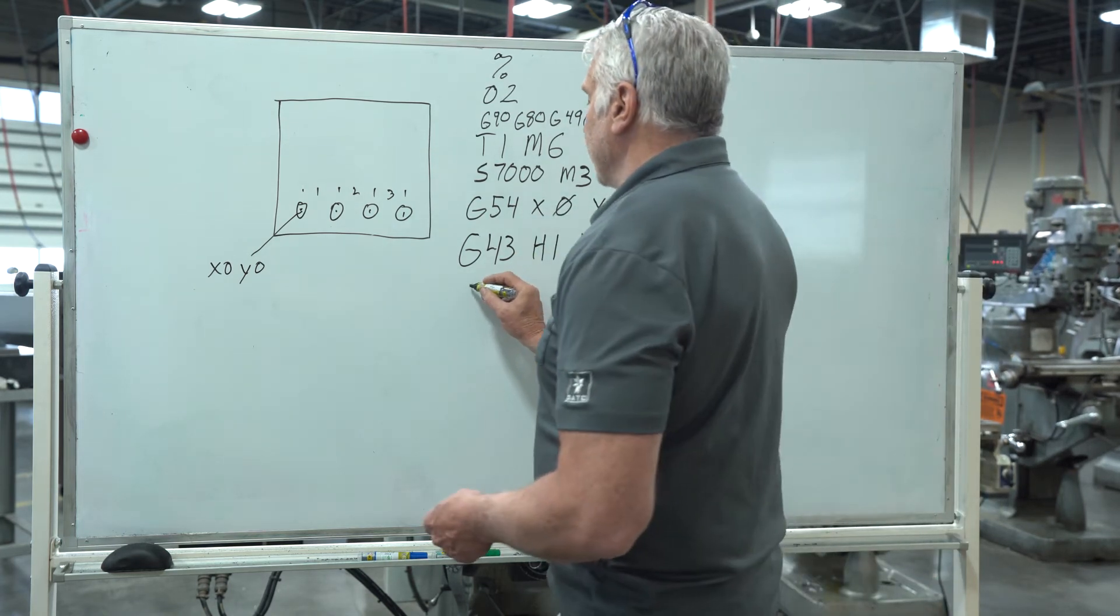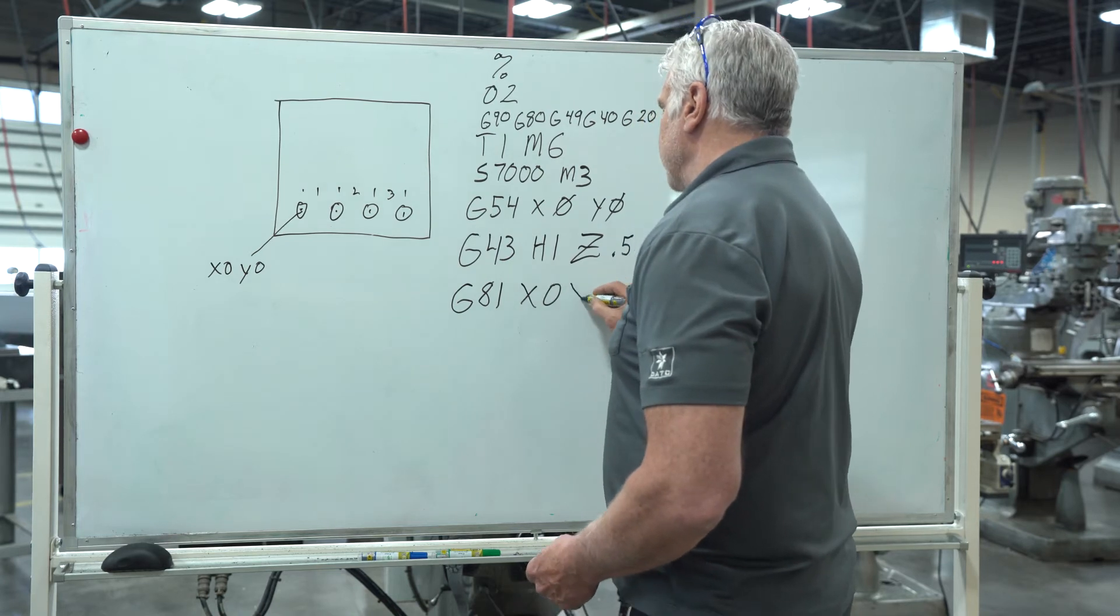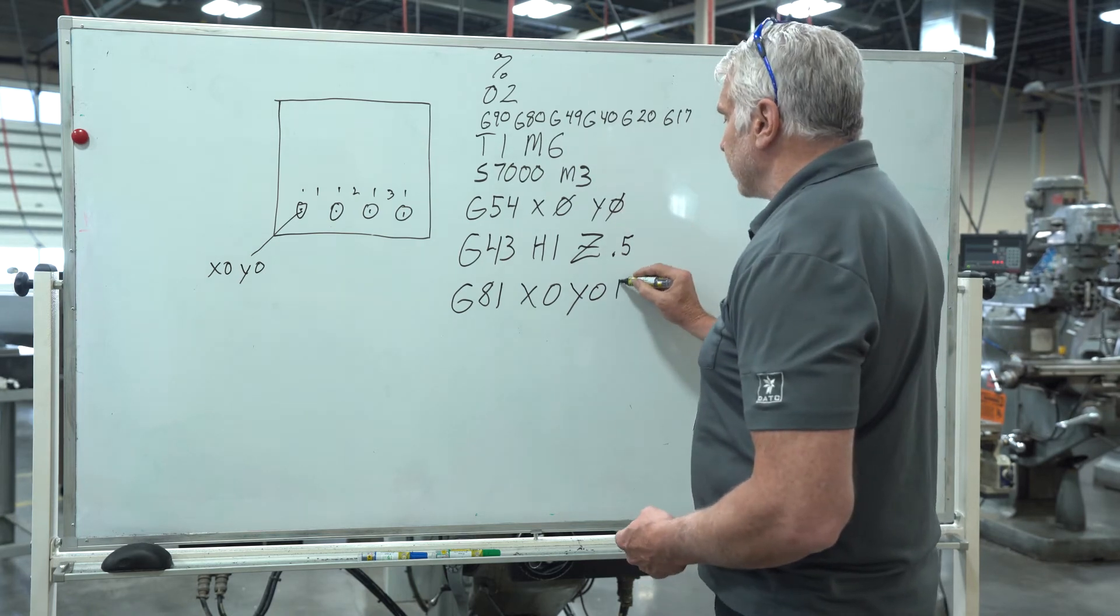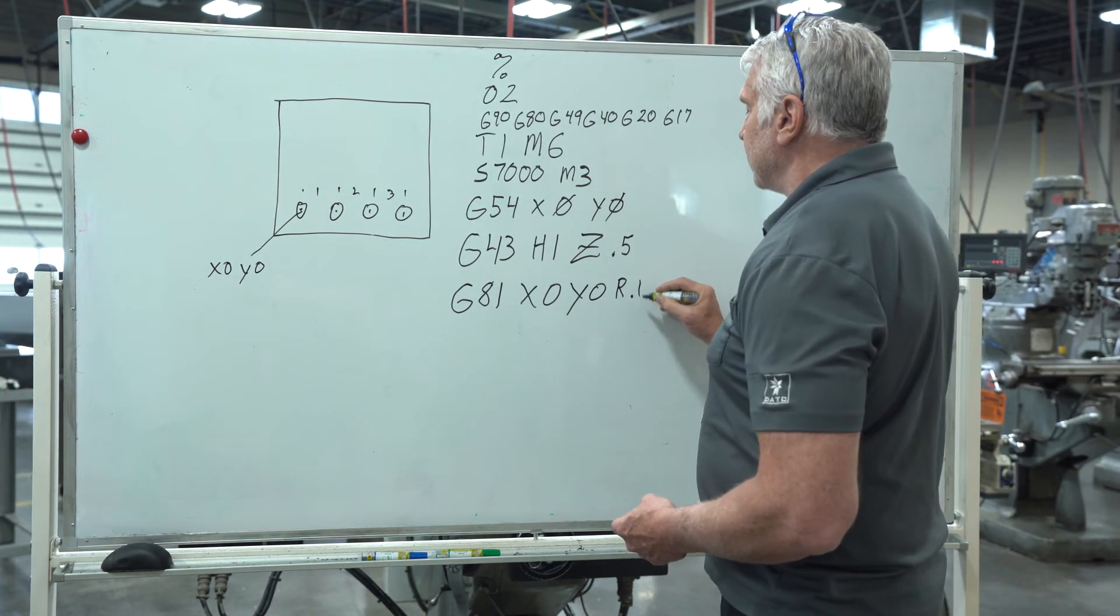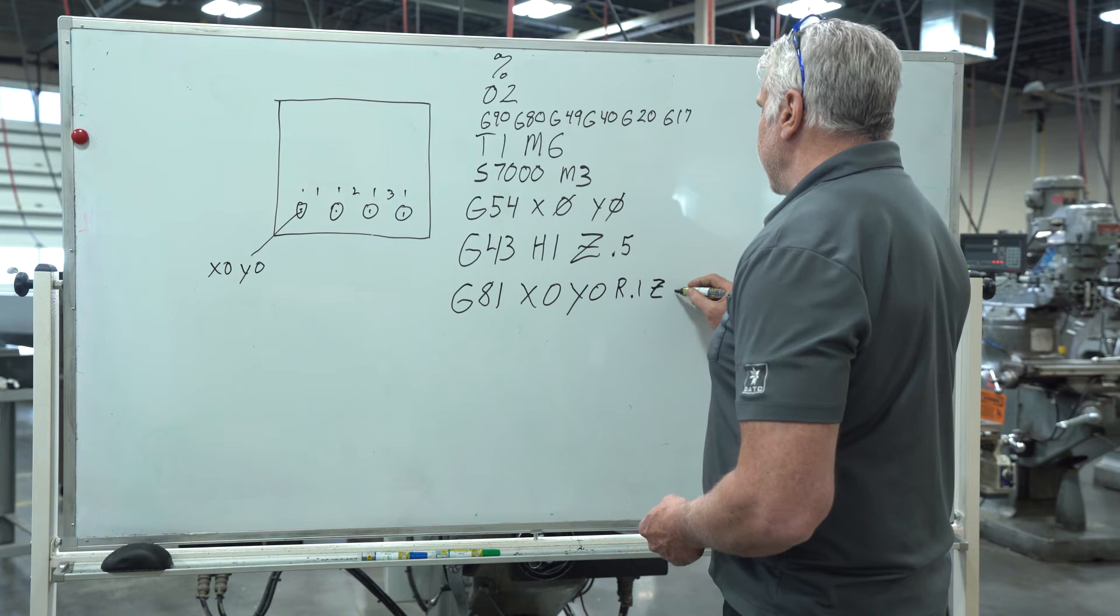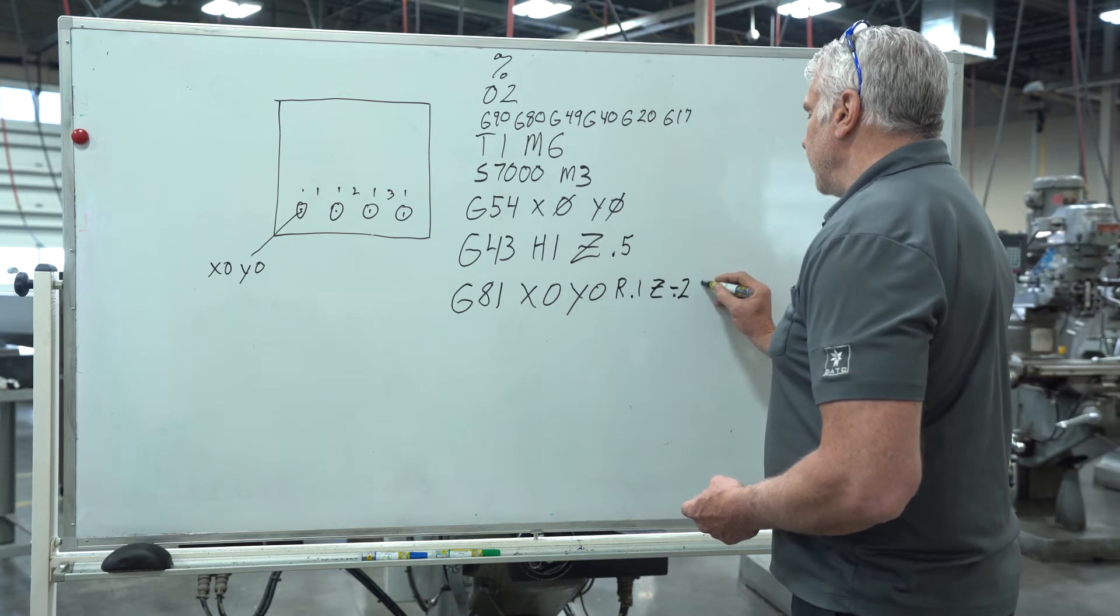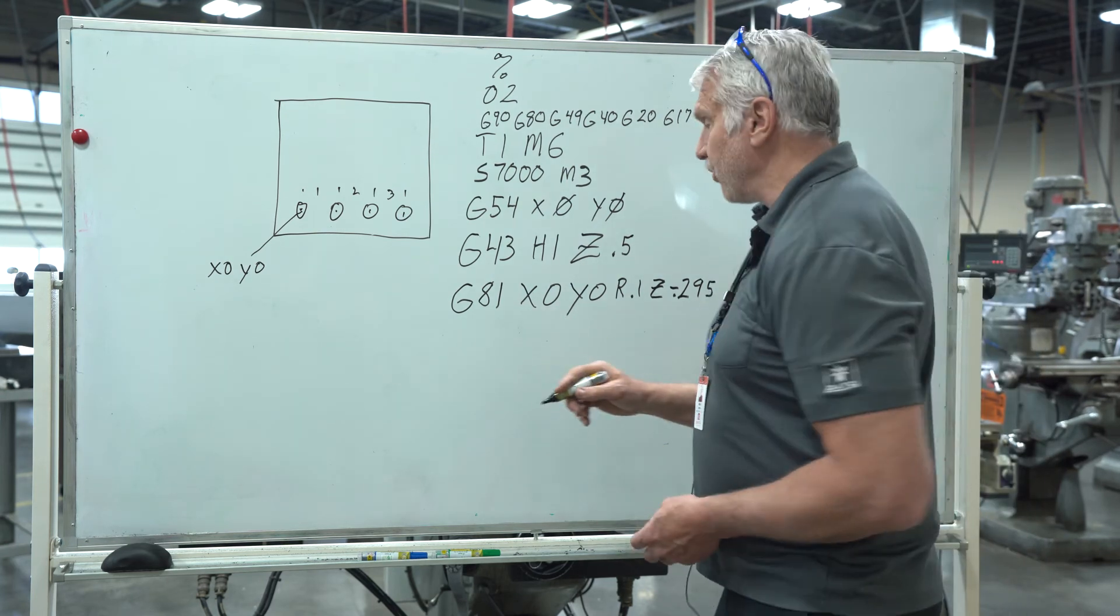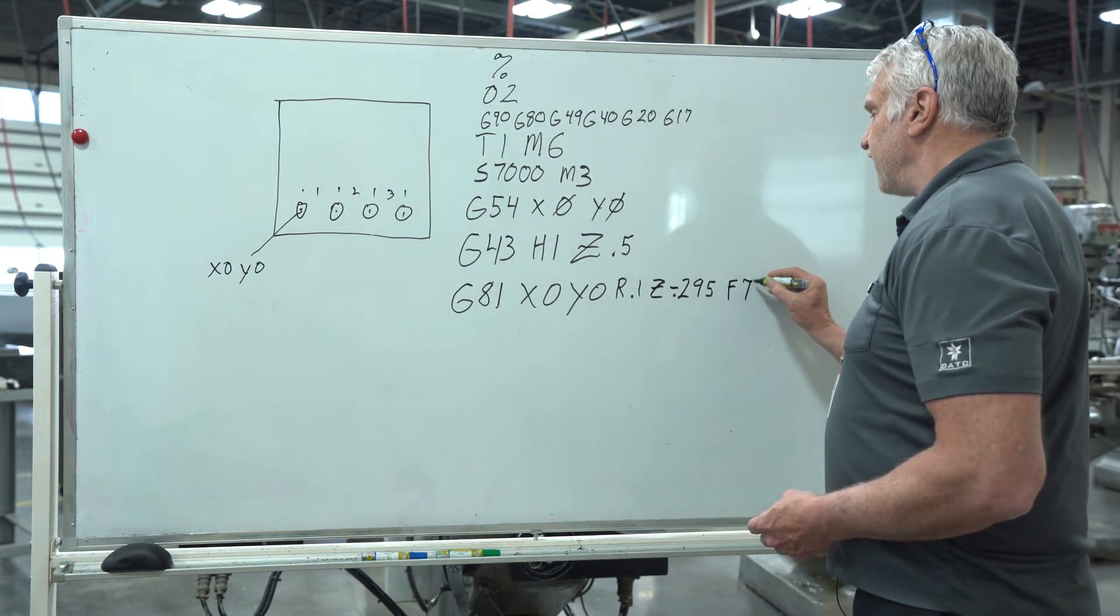Now we get into the CAN cycle. We're going to do a G81. Our first hole is at X0 Y0. When it starts feeding down into the part that's our R plane or retract plane or rapid plane. We're going to start feeding at 0.1 inch above the part and our final depth is going to be Z. We're using the number four center drill, it's going to be negative 0.295. That's how deep we're going so we get our chamfer in there for our next operation. Then we're going to give it a feed rate. In this particular case we're going to go 7.0 inches a minute.